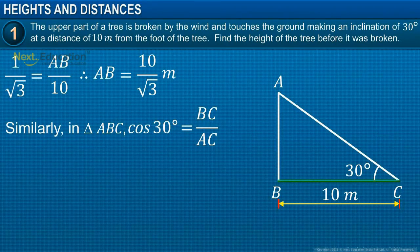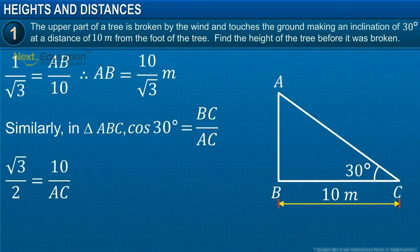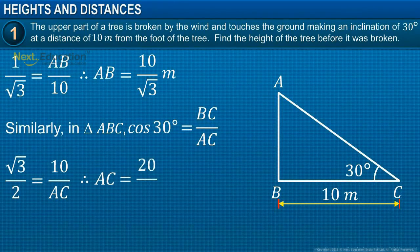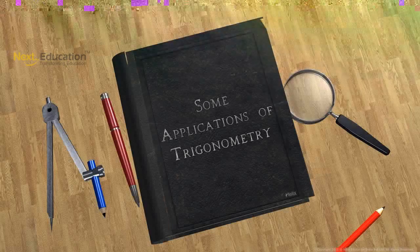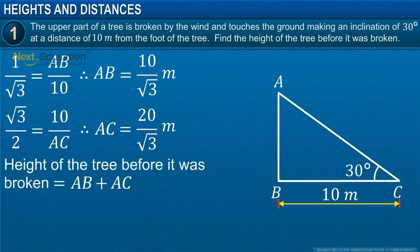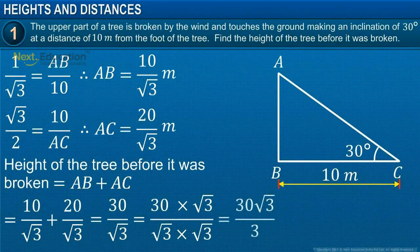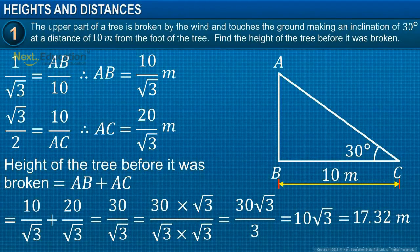Similarly, in triangle ABC, cos 30 degrees is equal to BC divided by AC. Substituting the values and simplifying, we get AC is equal to 20 upon root 3 meters. Therefore, the height of the tree before it was broken is equal to AB plus AC. Substituting the values of AB and AC, we get the height of the tree as 10 root 3 meters, or 17.32 meters.